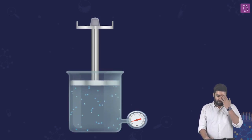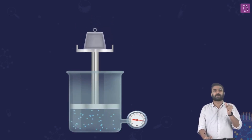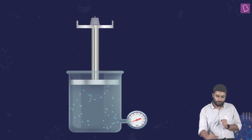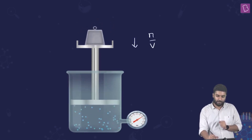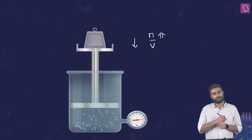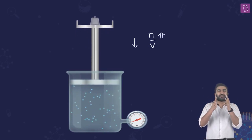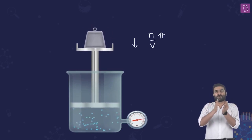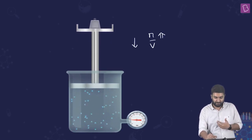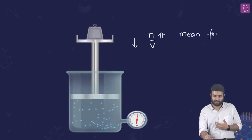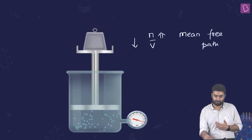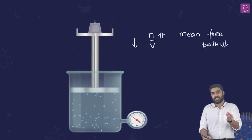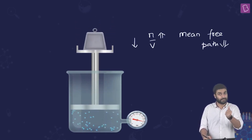When the piston moves down, the population density increases. If the particles are more congested, the distance between successive collisions is going to reduce. As a result, mean free path also decreases. So as population density increases, the mean free path decreases. Remember this.